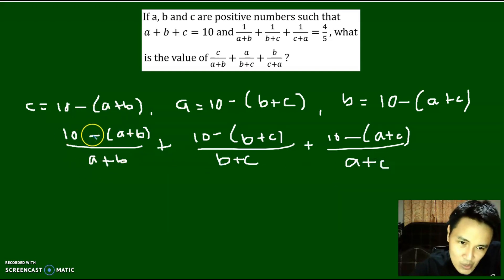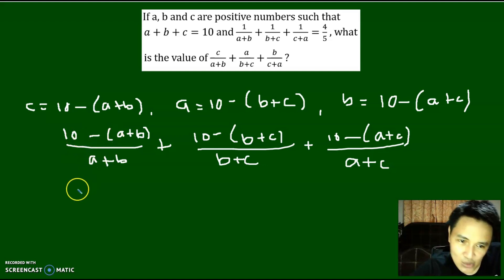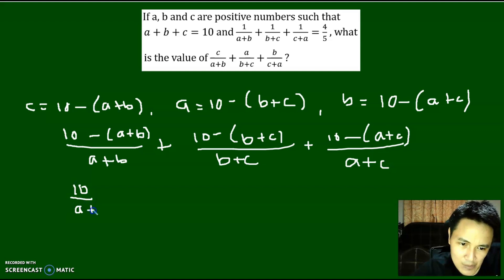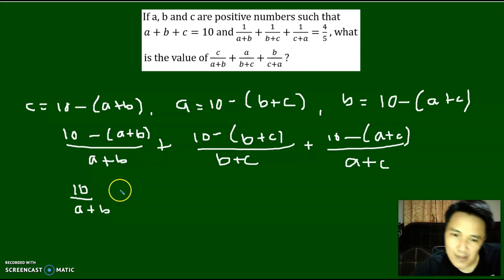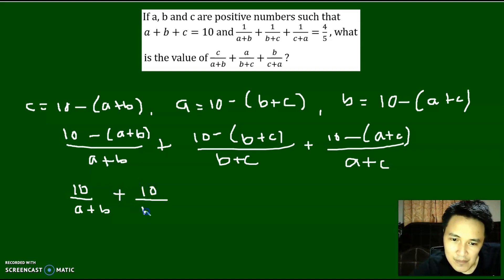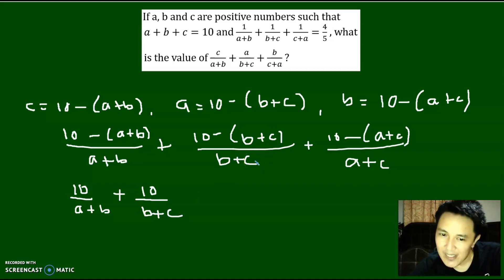Now observe that this first fraction, I can split it into two. That will give me 10 over A plus B, minus A plus B over A plus B — and that's 1. Plus, 10 over B plus C, minus B plus C over B plus C — that's another 1.